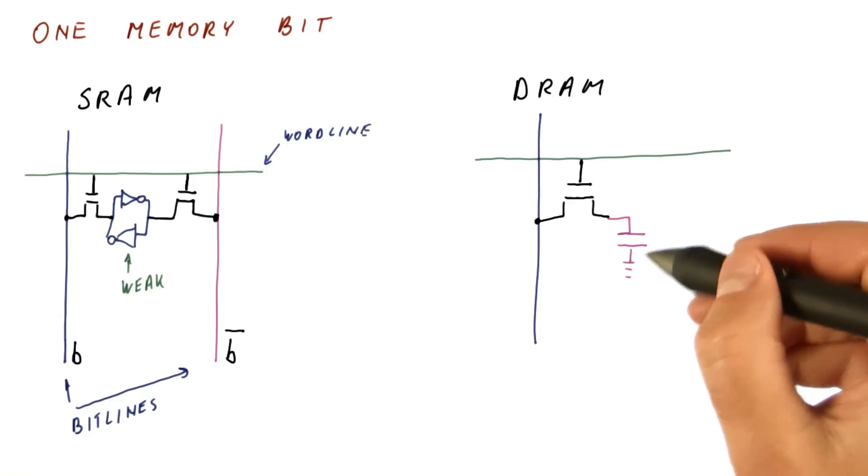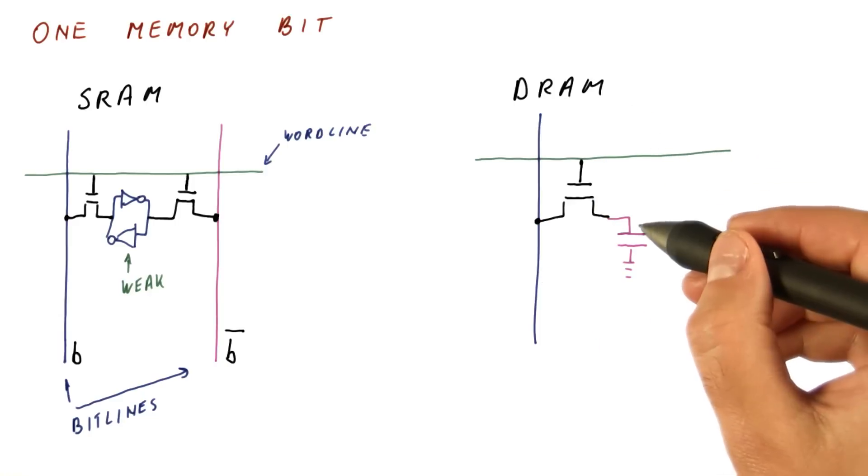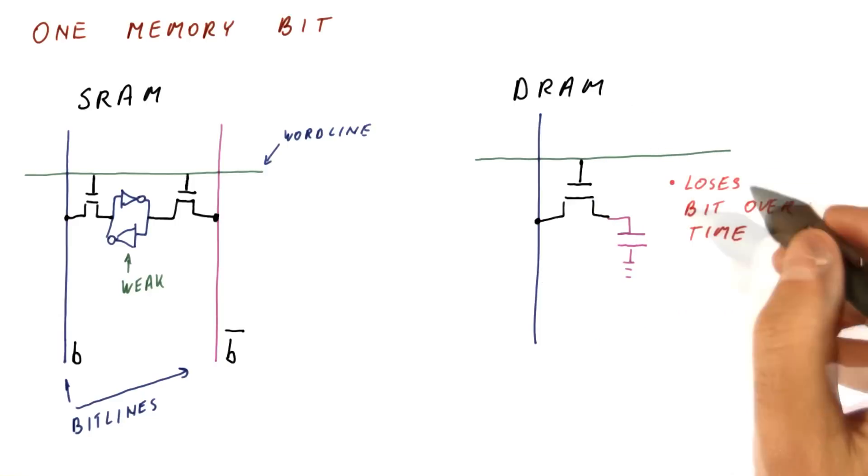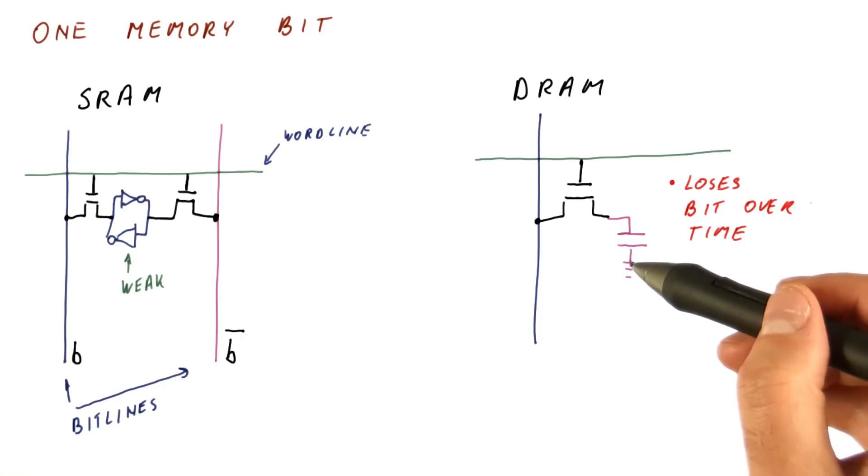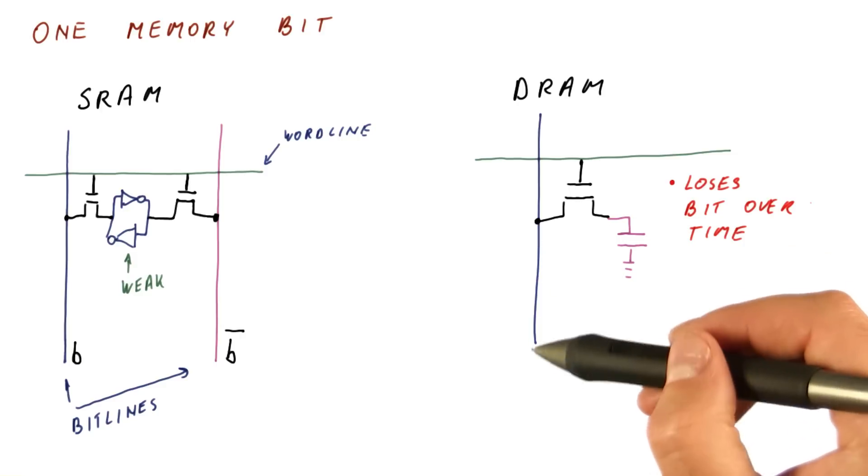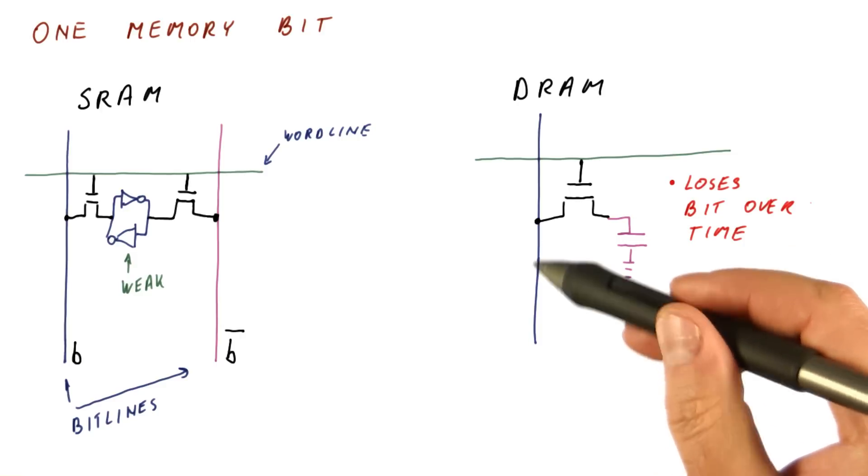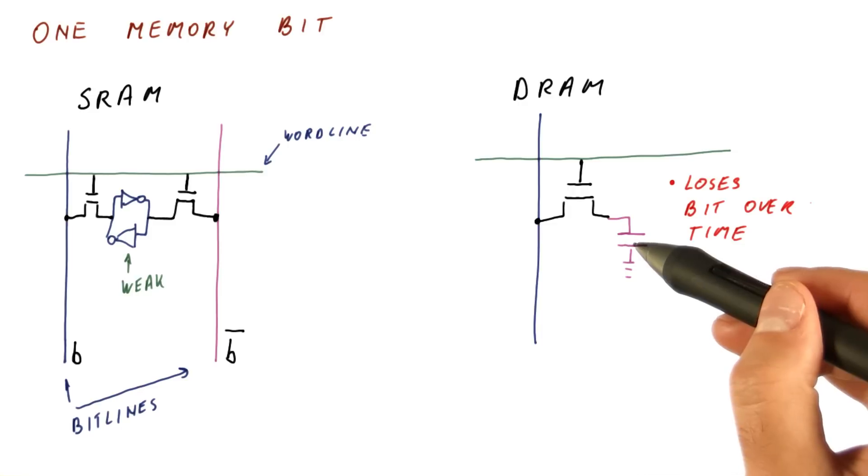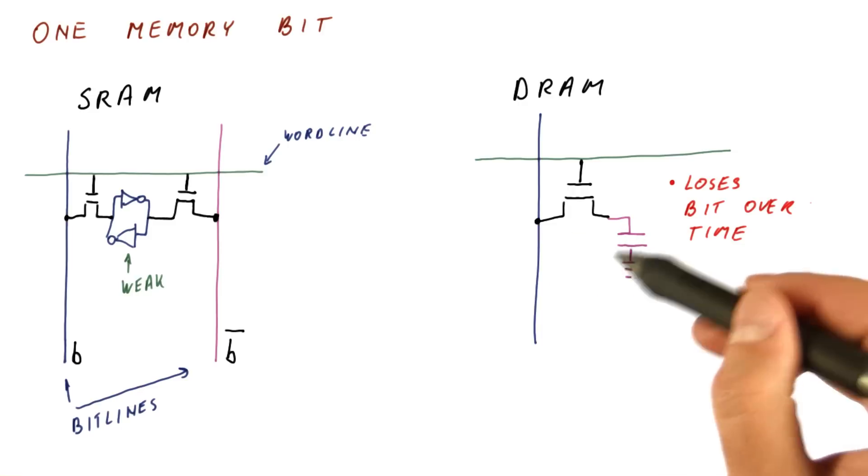But here, our capacitor is slowly leaking into the bit line and eventually gets empty. So one problem with DRAM is that it will lose this bit over time, and that means that periodically we have to actually read out this bit, figure out what it was, and write it back in at full voltage so that it can leak for a while before it gets lost.